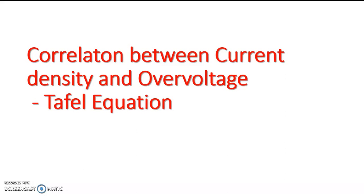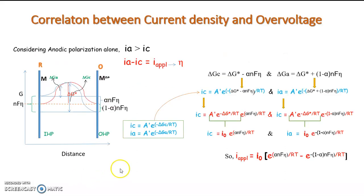In this lecture, we are going to derive the relation between current density and overvoltage. For that, I am considering the anodic polarization alone, which can reduce the complication in the figure and also in the derivation.